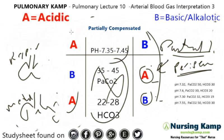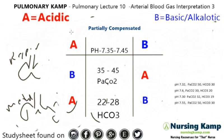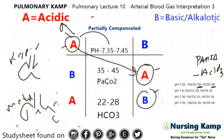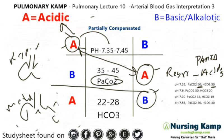Let's do some interpretation. We have a pH of 7.32 — that's less than 7.35, so we circle that one. Then a PaCO2 of 50, so we circle that one. And a bicarb of 30, we circle that one. Everything is on the outside, so it has to be partially compensated something. This is acidosis. The rule is we connect the two letters together. The PaCO2 is the respiratory area, so it's partially compensated respiratory acidosis.